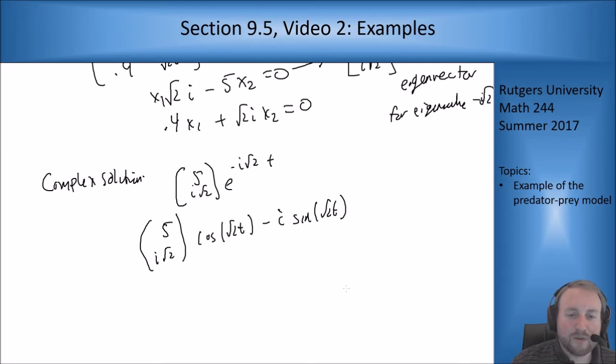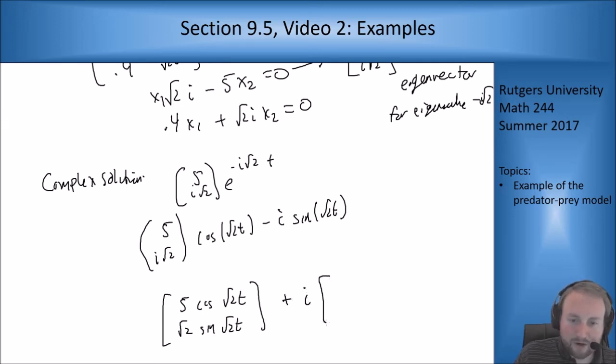Expanding this out, I get [5; i square root of 2] times (cosine of root 2t minus i sine of root 2t). If I do the distribution and everything, I'm going to see that I get for the real parts, 5 cosine of root 2t and root 2 sine of root 2t, and then plus imaginary part of negative sine of root 2t times 5 and root 2 cosine of root 2t.